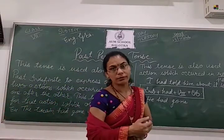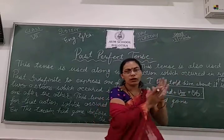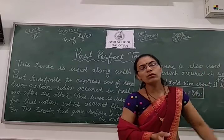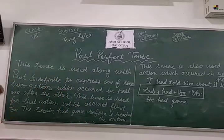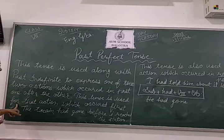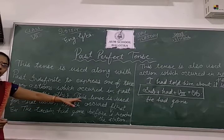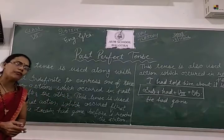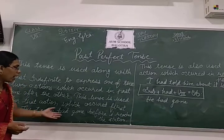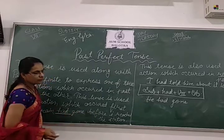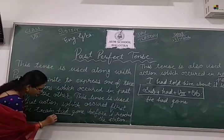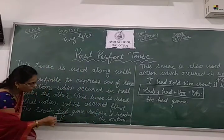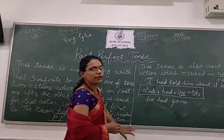For example: when I arrived at the station, the train had gone. The action which occurred first uses past perfect tense — 'the train had gone' — and the second action uses past indefinite tense — 'when I visited the station.' So: past perfect tense plus past indefinite tense.